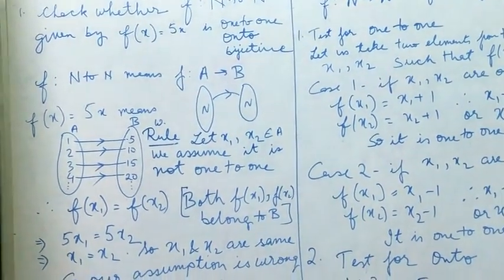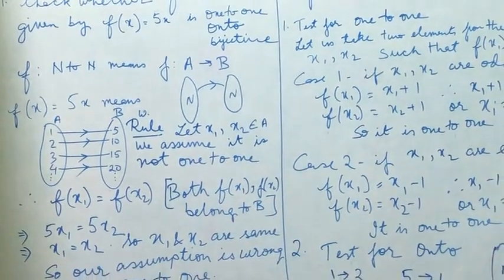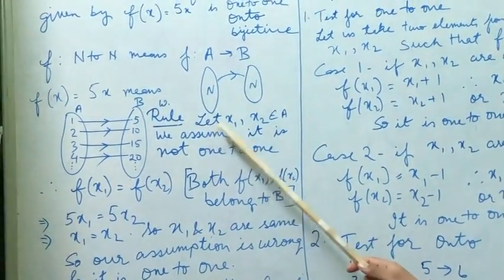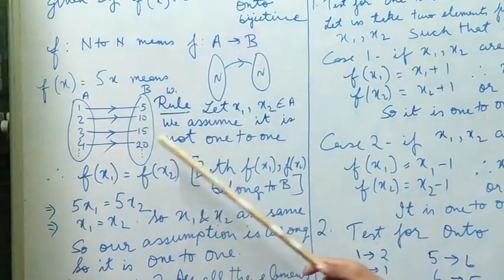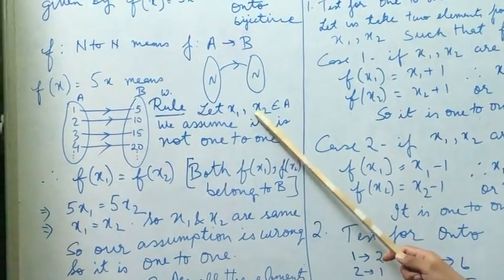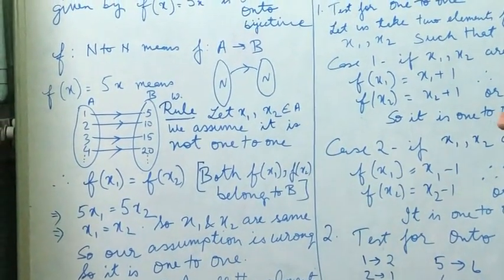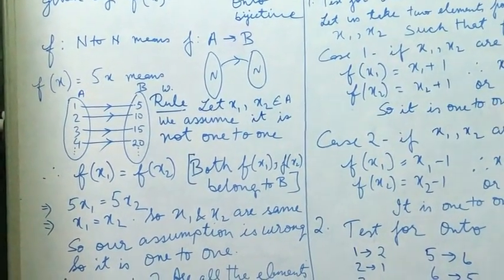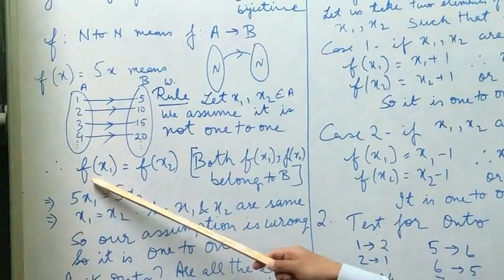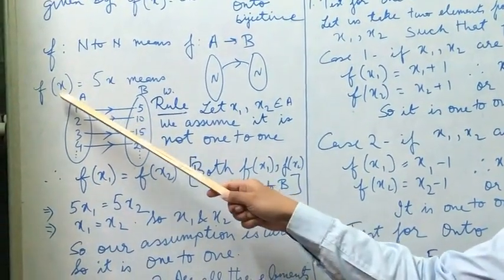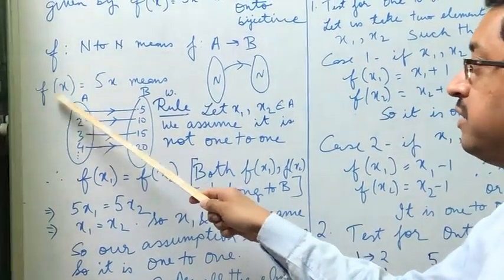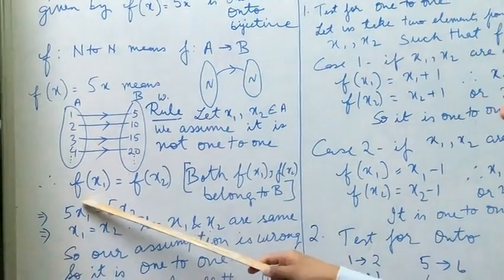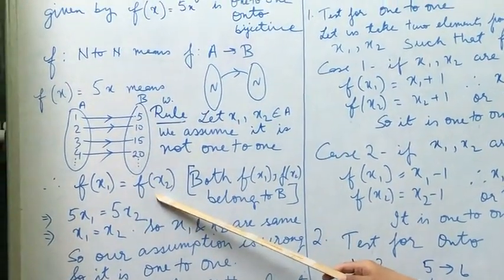But what is the working rule? The working rule is very different. We have to take two elements from set A. So let x1 and x2 belong to set A. We assume it is not one-to-one, so we assume it is many-to-one. Therefore f(x1), that is the value that we will get when we put x inside this, f(x1) will be equal to f(x2).